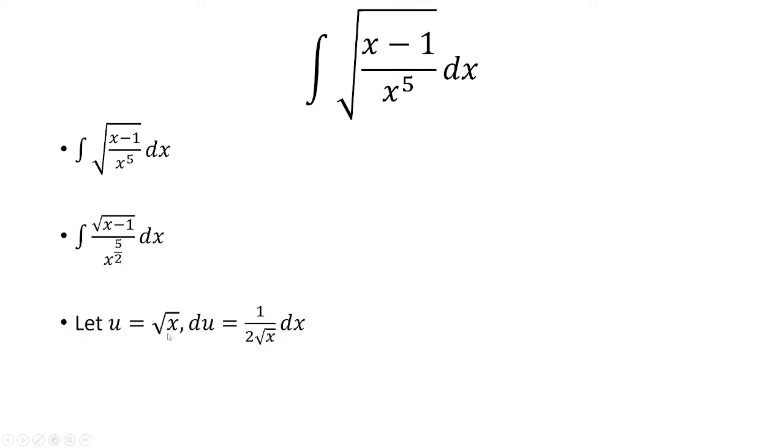Now let's let u equal the square root of x. du is 1 over 2 times the square root of x dx. So inside here we have x. x is u squared, since u is equal to the square root of x.